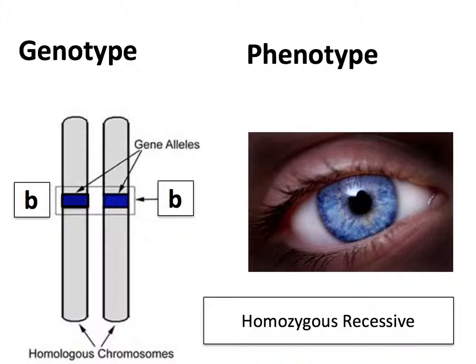I hope that was a helpful introduction to Mendelian genetics. Next time we're going to look at test crosses and how Punnett squares work. Thank you so much for listening.